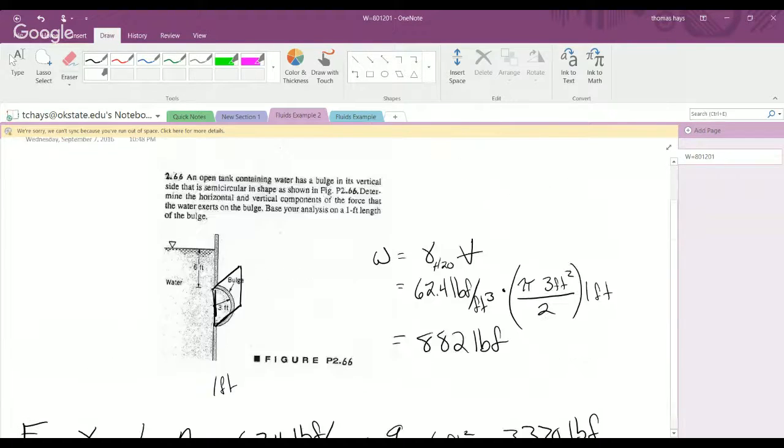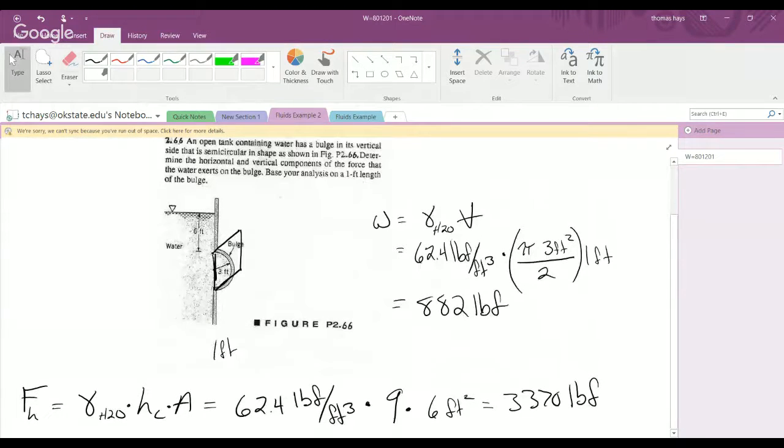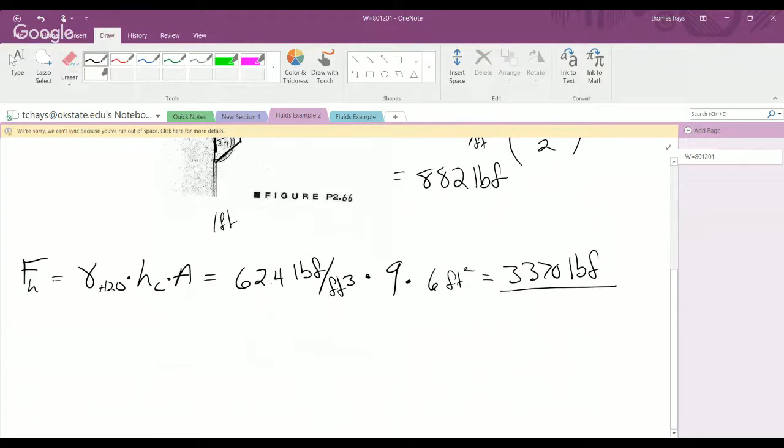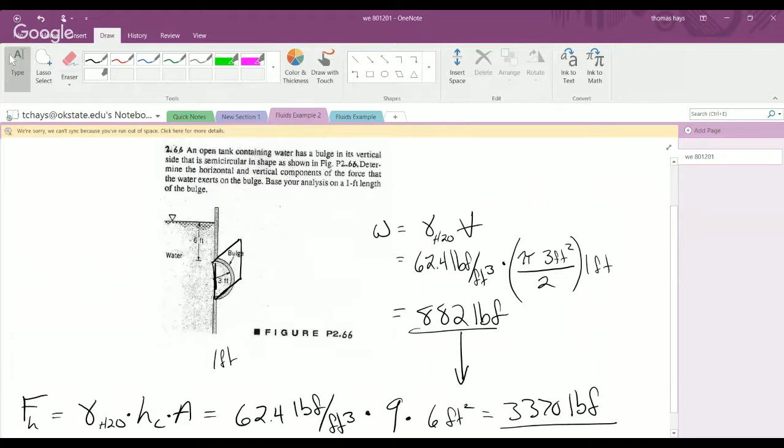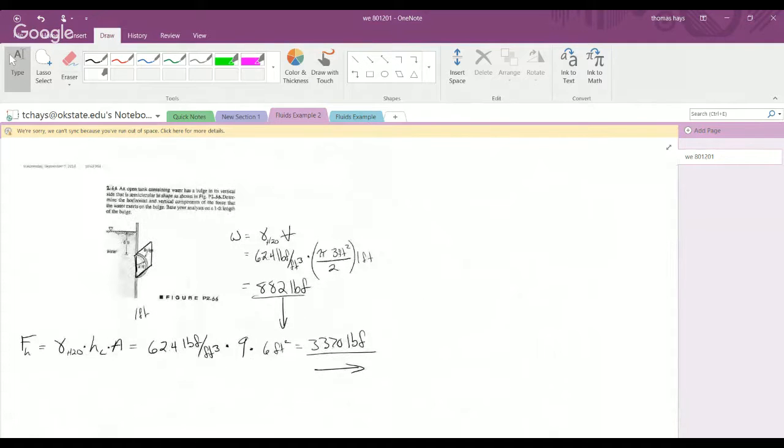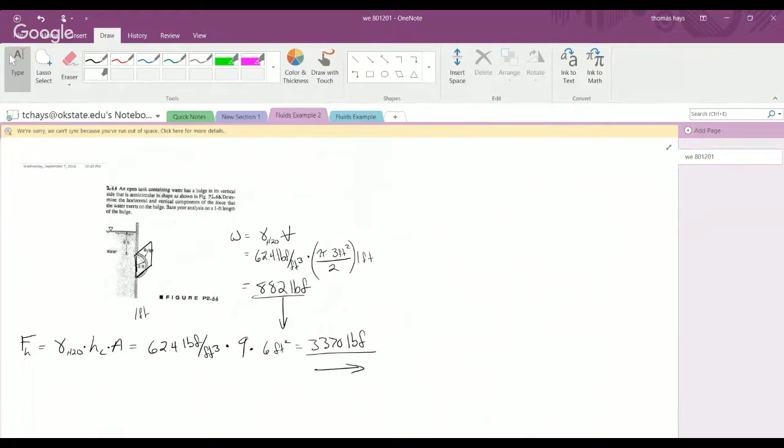So the question asks, and this is kind of a gotcha, I guess. Determine the horizontal and vertical components of the force that the water exerts on the bulge, not that the bulge in the wall exerts on the water. So it's important that the horizontal force of 3,370 pounds, the water is trying to force the bulge out to the right. The weight, the water is weighing down in that region because that's the direction gravity works. So again, not a complicated problem, but I just did these to reinforce perhaps some easier concepts and show that the setup is really what matters.